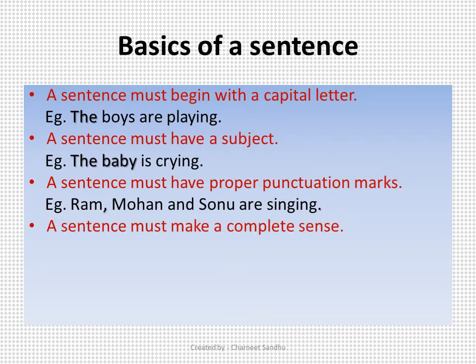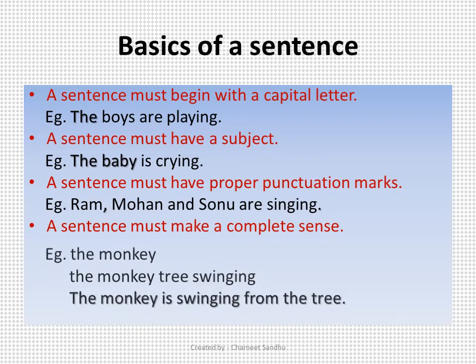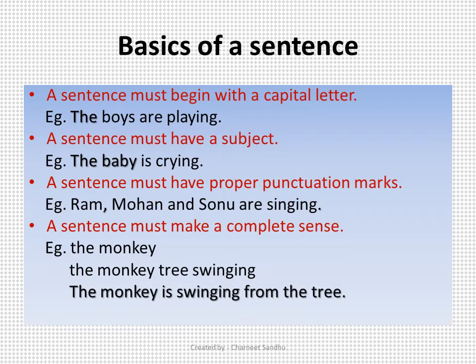The next point is that a sentence must make a complete sense. This we have already discussed. Let us look at one more example. 'The monkey.' 'The monkey tree swinging.' 'The monkey is swinging from the tree.' — Yes, the third set of words is a sentence because they convey a complete meaning and are arranged in a proper sequence.